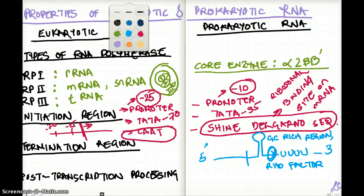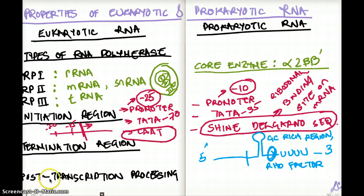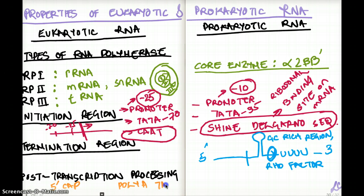Last is post-transcription processing. There is really no post-transcription processing for prokaryotic RNA, but there is for eukaryotic RNA. Eukaryotic post-transcription processing includes the addition of a 5' cap and a poly-A tail at the 3' end. These are important properties distinguishing eukaryotes from prokaryotes, and knowing this level of detail is sufficient for USMLE.